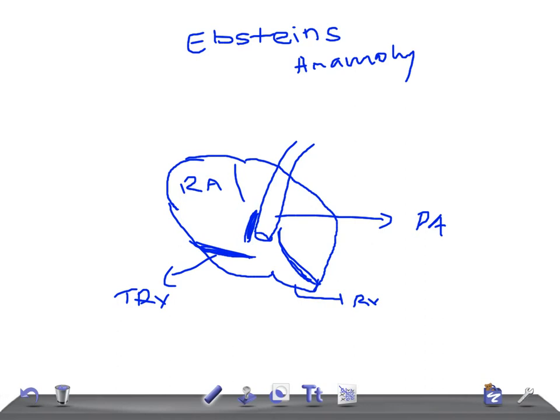So the wall leaflets are redundant and plastered against the ventricle walls. Hence, it looks as if there is a pulmonary atresia, so no blood to the lungs via what you call through the pulmonary artery, and the right atrium is really very big.